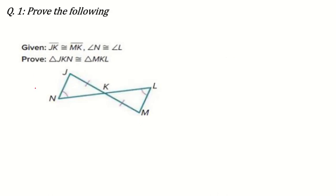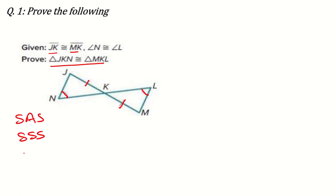This question is related to the congruency of triangles. In this question, we have to prove that if JK is equal to MK — meaning these two sides are given equal — and the measure of angle N is equal to measure of angle L. So we have to prove that triangle JKN is congruent to triangle MKL. There are many conditions for congruency: SAS, SSS, AAS, and so on. We will see what we can apply here.